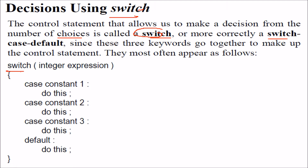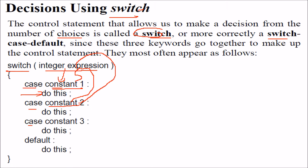The syntax is like this. We write switch, and inside the parenthesis is our integer expression. This is matched with the cases, which are followed by a value to be equated or checked with the integer expression. If it matches, we perform that activity. The constant value must always be a constant. Depending on which case matches, the corresponding case will be executed. If no cases match, we go to default. Default is optional — even if you do not write it, there will be no problem.